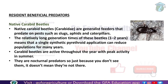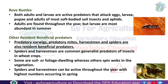Rove beetles are another resident predator. Both adults and larvae are active predators that attack eggs, larvae, pupae, and adults of most soft-bodied insects. They are found throughout the year, but larvae are most abundant in summer. In attack mode, both adults and larvae target prey at all life stages.